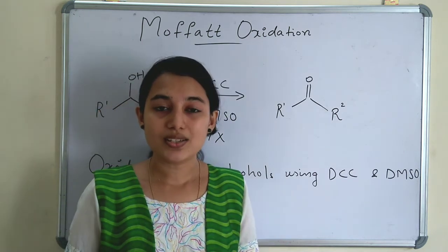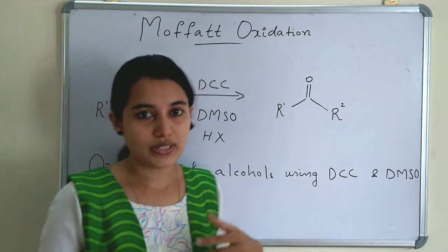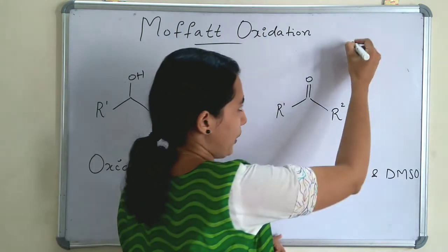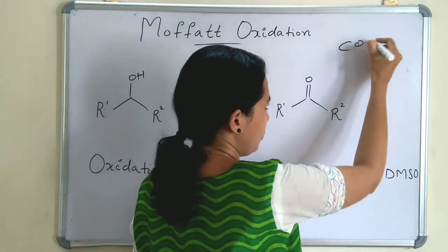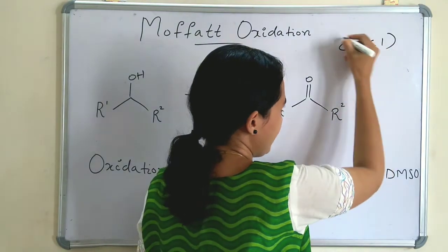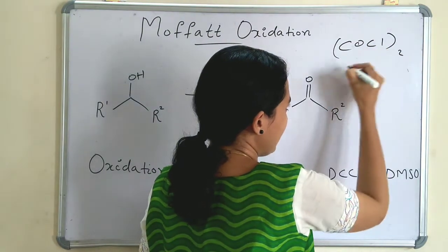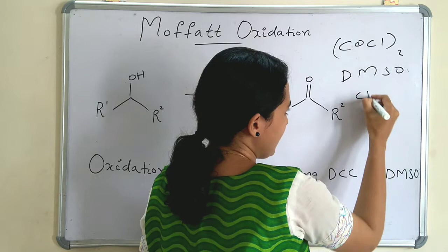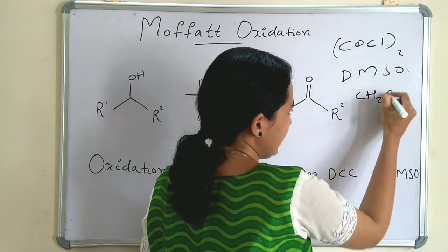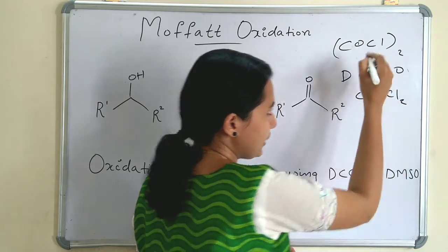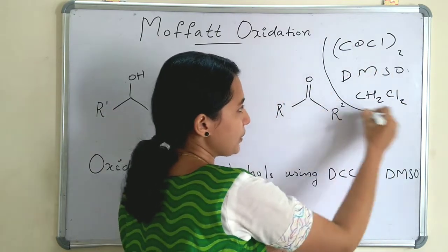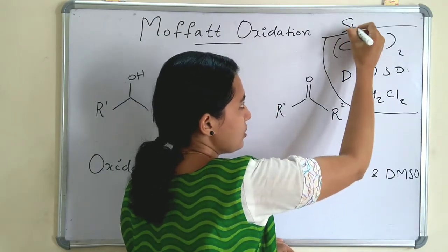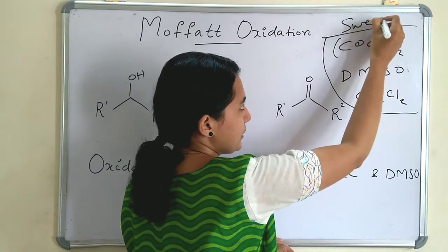What are the reagents of Swern Oxidation? Oxalyl chloride (COCl₂) and dimethylsulfoxide (DMSO), with CH₂Cl₂ as solvent. These are the reagents of Swern Oxidation.